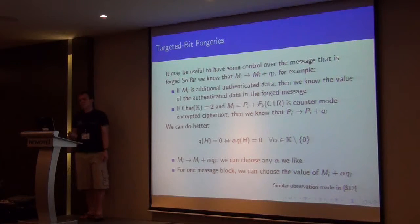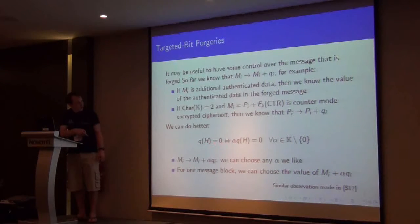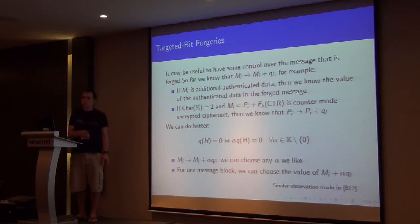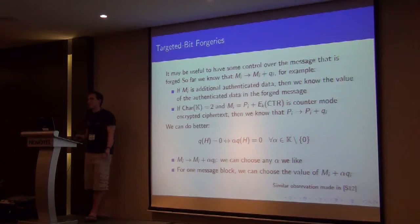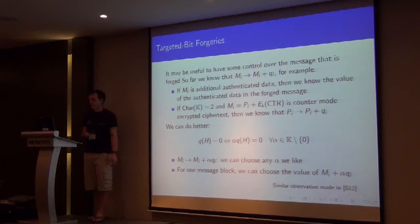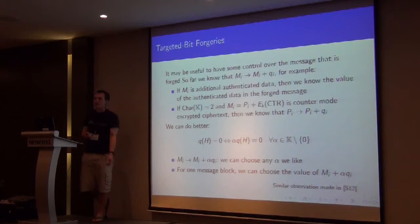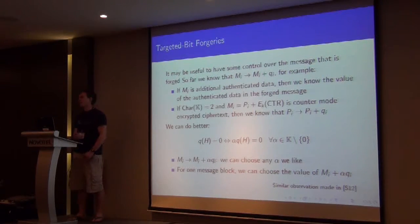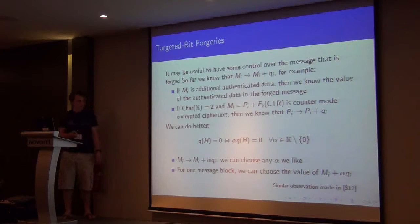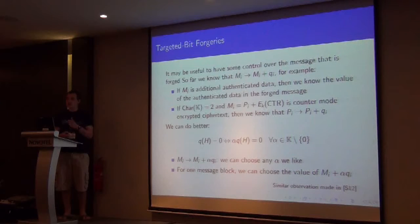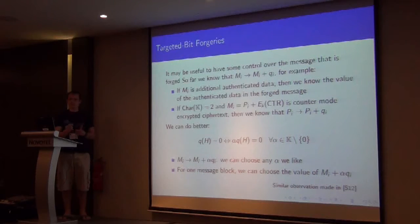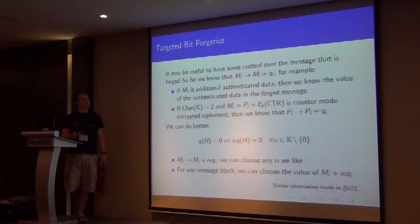We can do it a bit better than this, because multiplying our polynomial here by some alpha in the field that doesn't change anything. And now if we forge with alpha q rather than with q, m_i becomes m_i plus alpha q_i. And we can pick any alpha that we want. So it means for one message block we can choose our alpha so that that message block has the differential that we would like. And this is how we get the length extension attack.